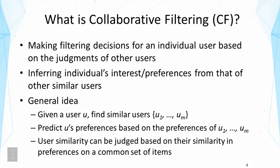Collaborative filtering is making filtering decisions for an individual user based on the judgment of other users. That is to say, we infer an individual's interests or preferences from those of other similar users. The general idea is: given a user u, we first find similar users u1 through um, and then we predict user u's preferences based on the preferences of these similar users.